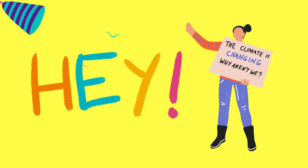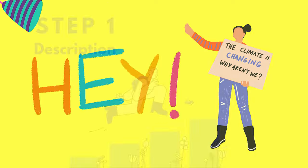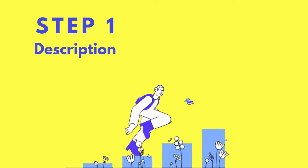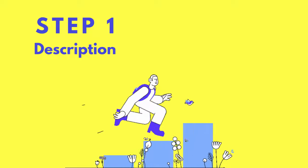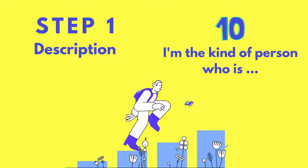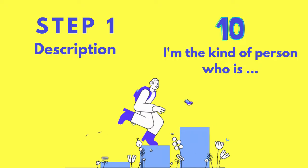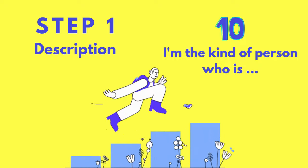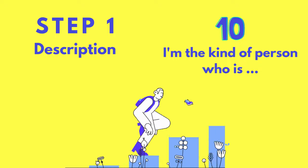To change your negative self-schemas, there are three steps and example. Step 1, we call it description. Take out some paper and a pen. Write down 10 ways you see yourself, such as I'm the kind of person who is incapable or energetic or whatever. Cross out the positive ones and keep the negative descriptions.